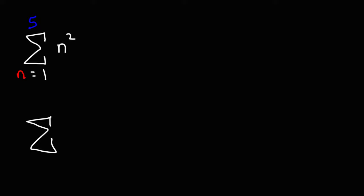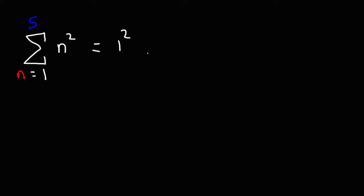What we're going to do is write out some numbers, starting from 1 and then to 5, using this expression n squared. So when n is 1, we're going to have 1 squared. And since we're taking the sum, we're going to put a plus. When n is 2, we're going to have 2 squared. We're going to continue this all the way to 5. This expression is telling us to take the sum of n squared from 1 to 5.